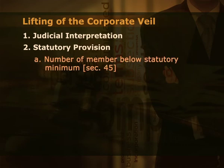First, number of members below statutory minimum, section 45. When at any time the number of members of a company is reduced below 2 in case of a private company, or below 7 in case of a public company, and it continues its business for more than 6 months, then every member who knows the fact will become liable to an unlimited extent for the payment of the whole debt of the company incurred during that time. The reason behind this is to withdraw the advantage of incorporation when the conditions are not fulfilled.